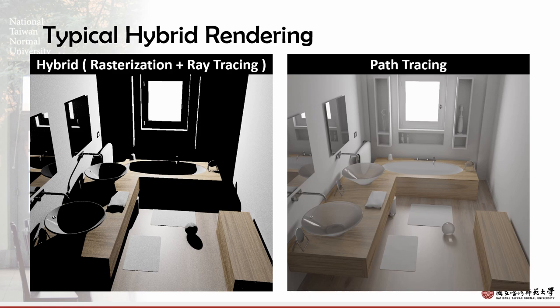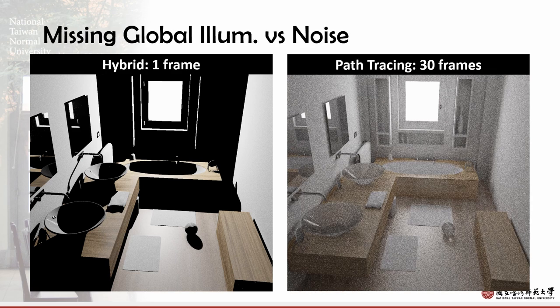Hello, I'm Jia Wen Zhang from National Taiwan Normal University. Typical hybrid rendering uses rasterization to render. It executes ray tracing only when a ray hits a mirror. Hybrid rendering can produce an image with low noise in a small amount of time, but the global illumination is missing in the output.